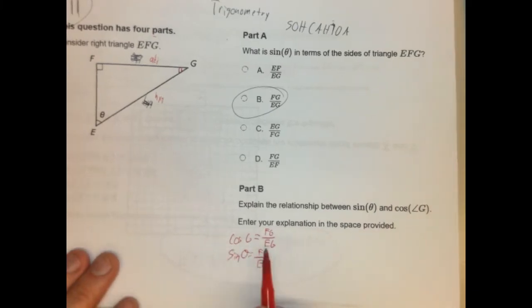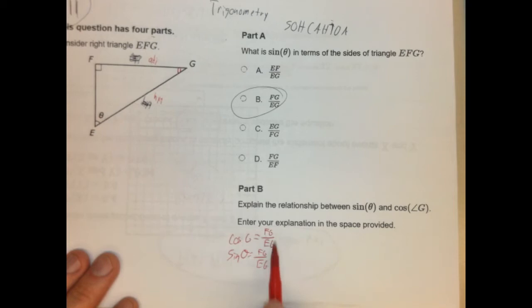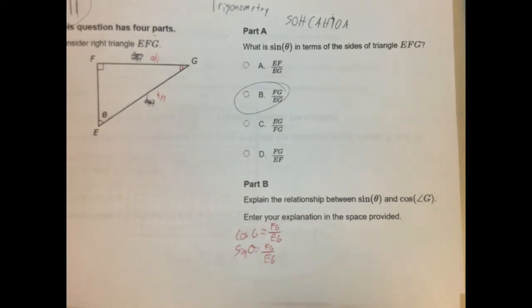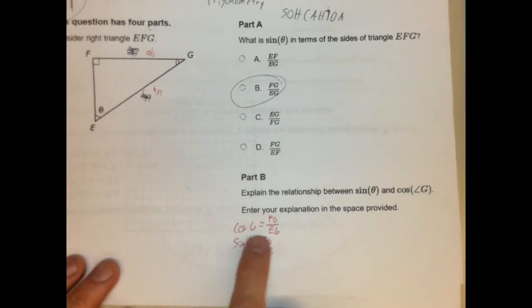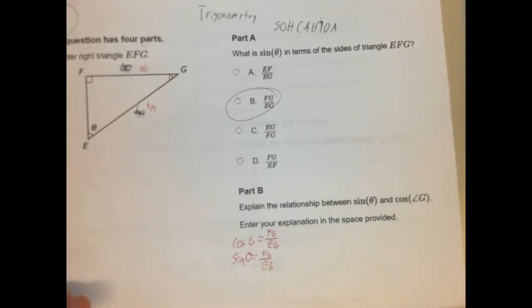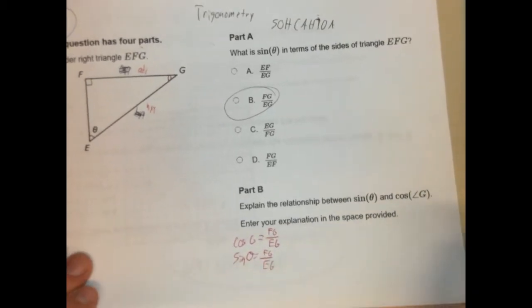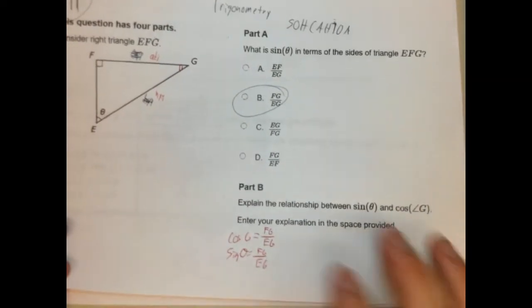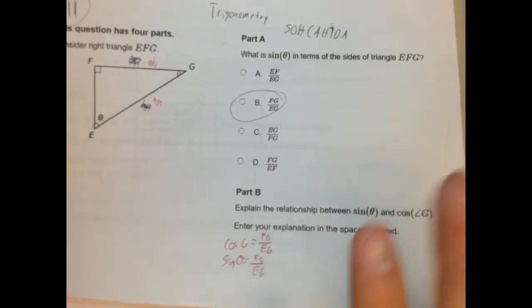If you wanted to, you could write this out. You could say cosine of G equals FG over EG, or sine of theta equals FG over EG. It would be plenty to say they are equivalent ratios. That would be plenty. Enter your explanation. You could say cosine of G and sine of theta are the same thing. If you wanted to, you could write this out. So those are the first two parts. Not too bad, right? The first two parts are not too bad.